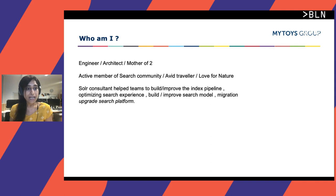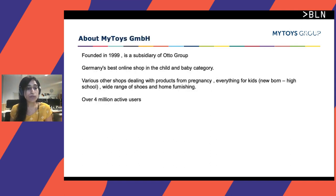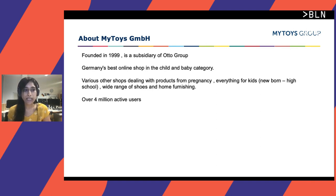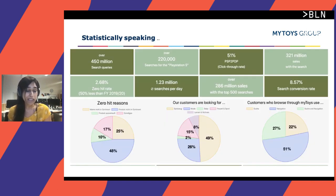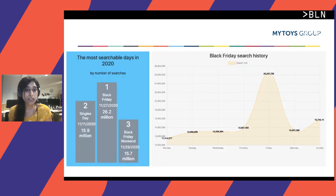myToys TMBH was founded in 1999. It's a subsidiary of Otto Group, and we have various other shops that we support, with products ranging from pregnancy to everything about kids, a wide range of shoes, and home furnishing. We have over 4 million active users, and statistically speaking, we serve about 1.3 million searches per day, with a conversion rate of around 9%. From last Black Friday, we served about 26.2 million queries in one single day.